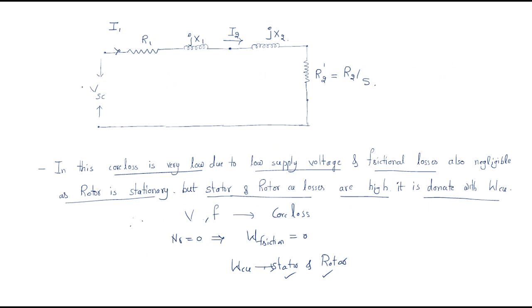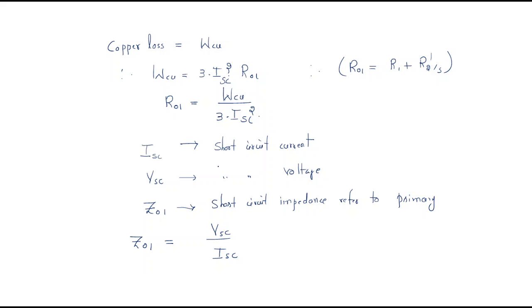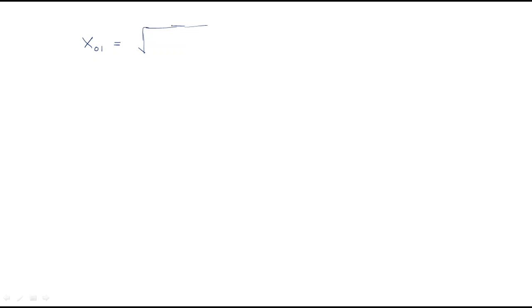From VSC divided by ISC we get Z01. From this we can find the motor leakage reactance per phase: X01 = √(Z01² − R01²).